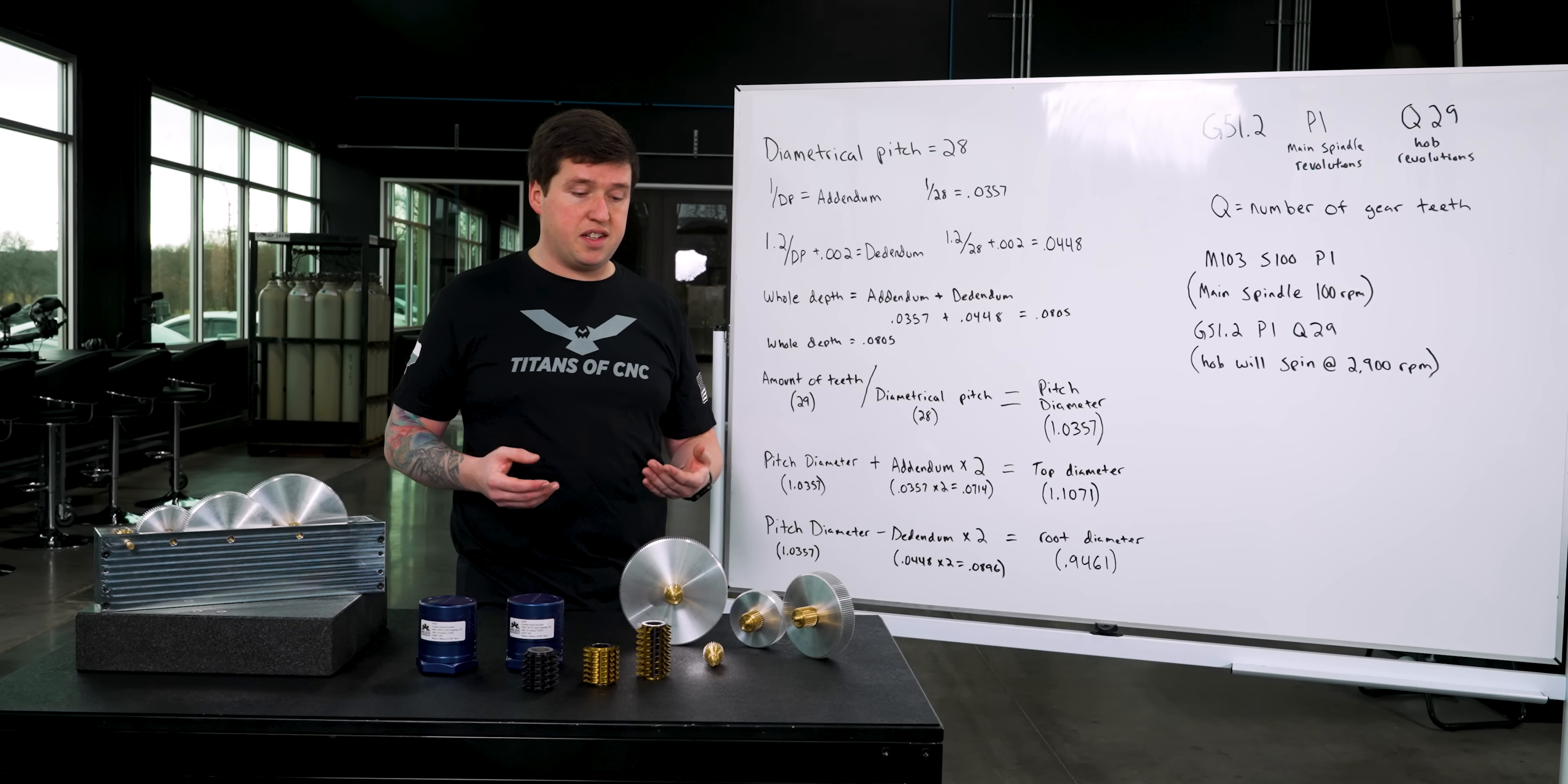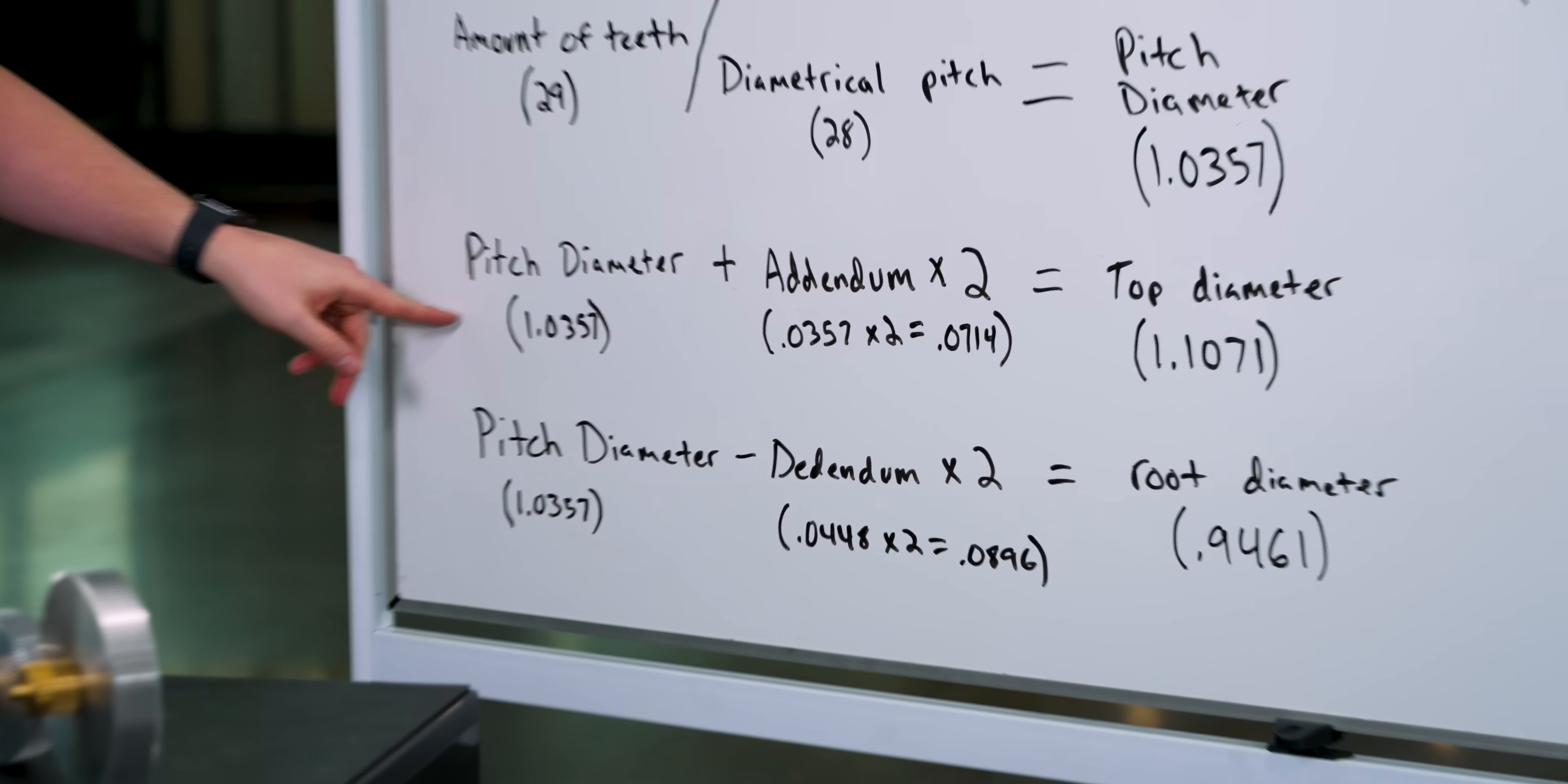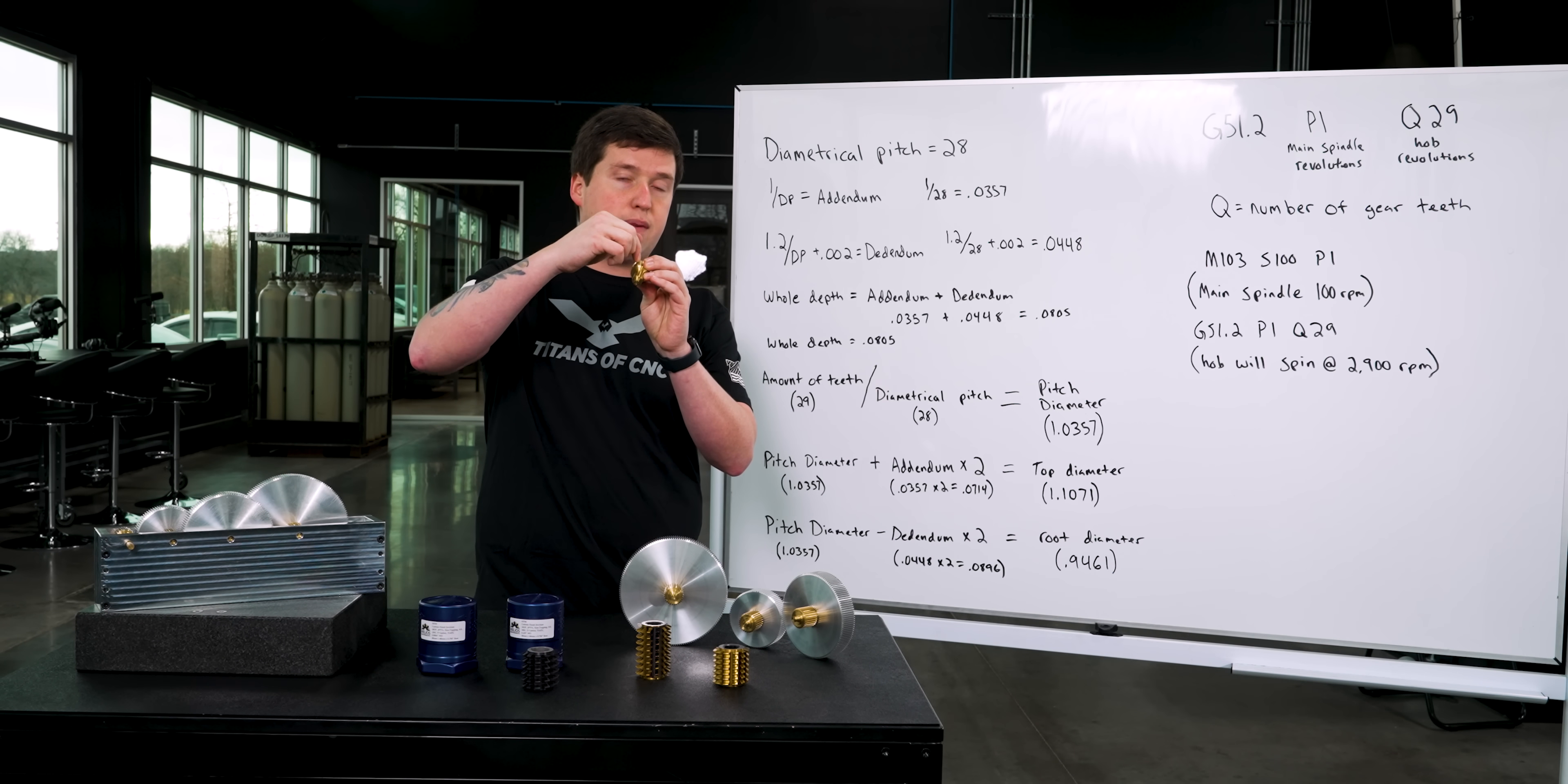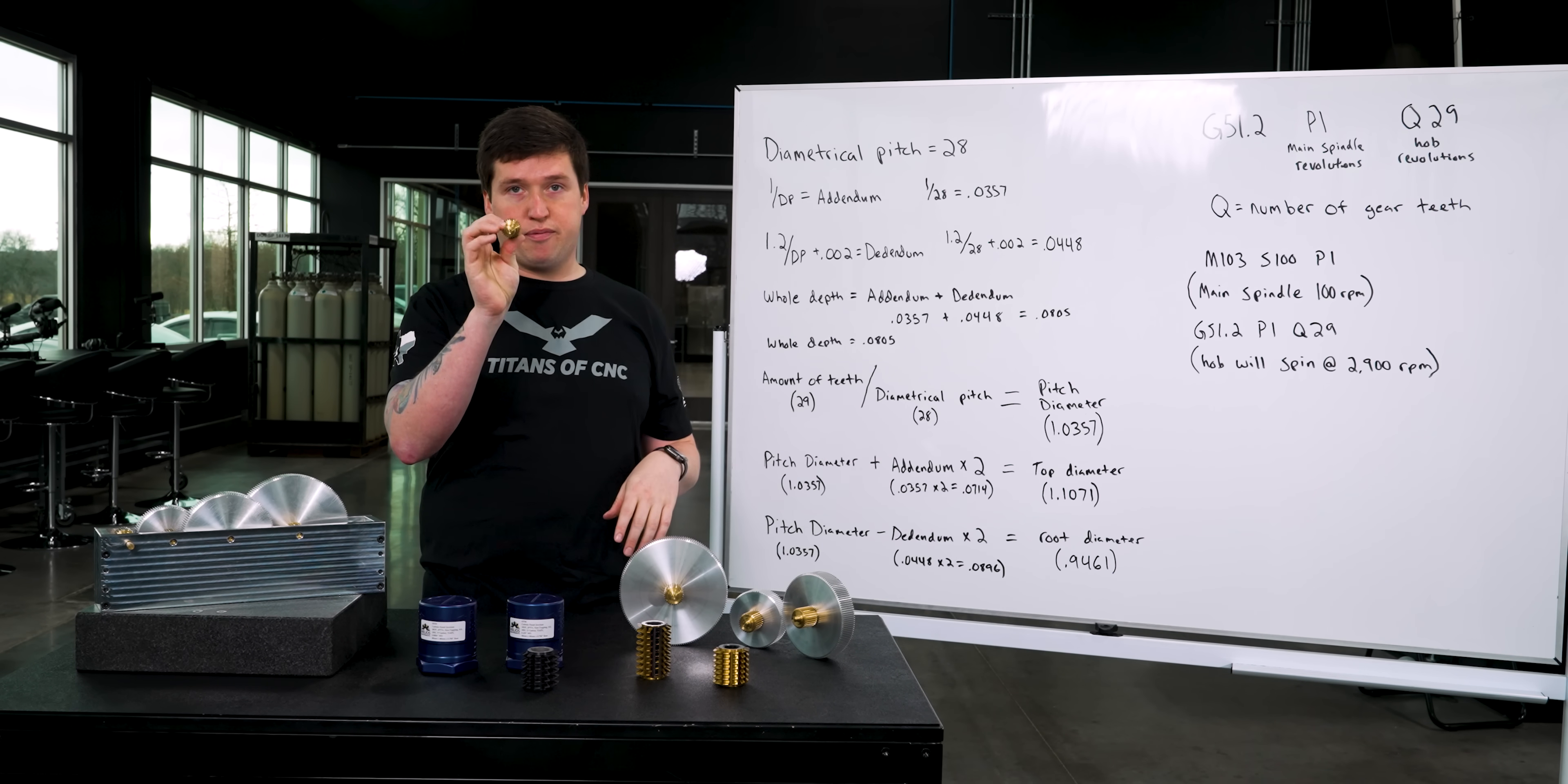These next couple things is what we're going to need to know as programmers to program our part in our machine. So we're going to CNC machine a gear. That means from the side here I'm going to have to turn a profile. I'm going to turn this top diameter. So this top diameter is going to be turned, it's not going to be formed by the gear hob, it's going to be turned by our turning tool. So what is that diameter? In order for us to calculate that, we'll take our pitch diameter and add our addendum times two to get our top diameter which is 1.1071. Now in my program I'm going to need to know the bottom of the gear tooth, how far am I going to go down in X to actually achieve the right dimension. So I took the pitch diameter minus the dedendum times two, and you'll get your root diameter. So the bottom of this gear at the very bottom should be 0.9461.